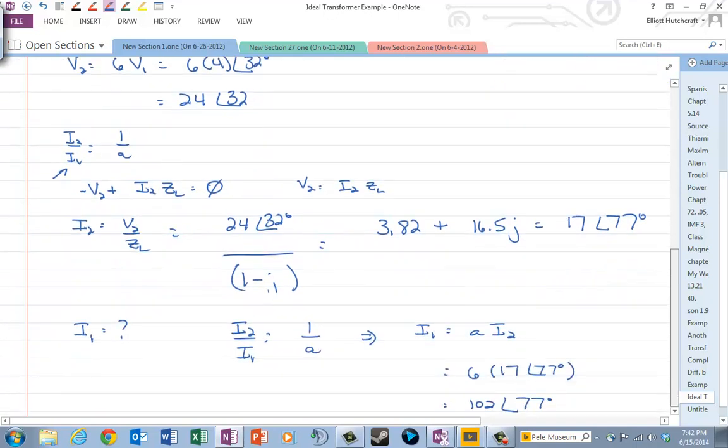What happened to I? Well, I got 6 times smaller. I1 was 102 angle 77, but I2 is 17 angle 77. So I2 is 6 times smaller than I1. V2 is 6 times larger than V1. What happens to the power?